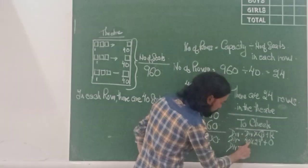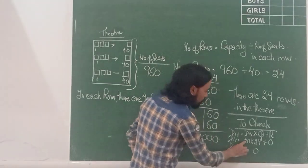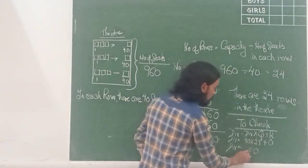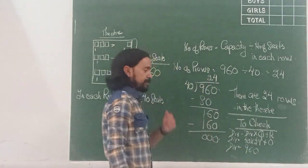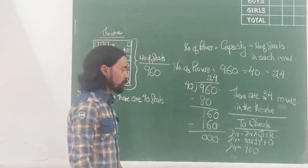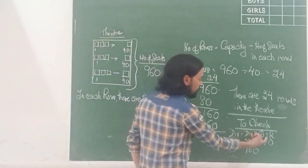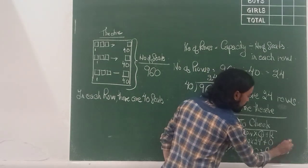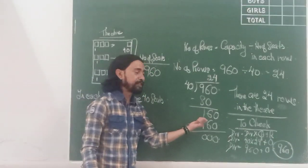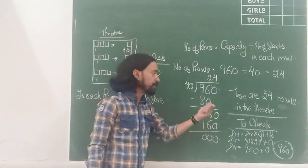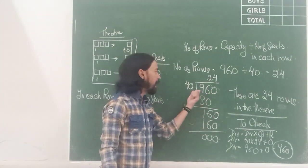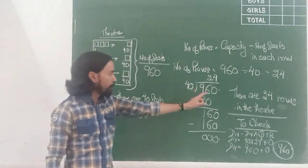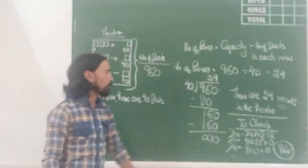Now, if I put this 40 into 24, 0 will give me 0. 4 4's are 16, carry 1. And 4 2's are 8 and 1, 9. 4 2's are 8 plus 1, 9. 960 plus 0 will give me 960. That means I have correctly divided. I have divided the dividend by the divisor absolutely correctly. And therefore, my answer is that there are 24 rows in the theater.